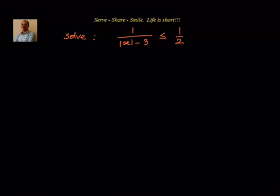Hello friends, welcome back. We have been given that 1 divided by the absolute value of x minus 3 is less than or equal to 1/2. We have to solve for the solution set of x by solving this inequality.